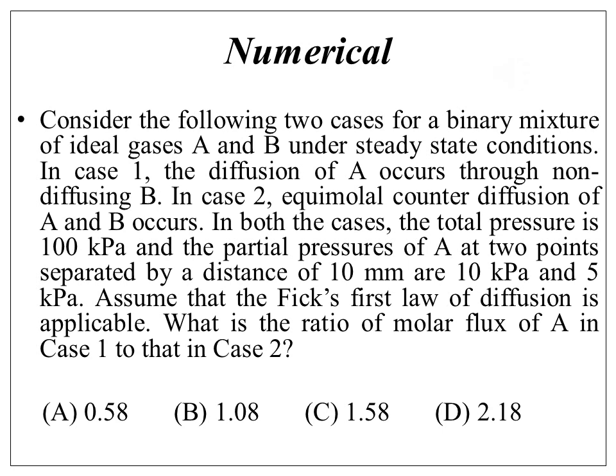In this problem, we consider two cases for a binary mixture of ideal gases A and B under steady-state conditions. In case 1, diffusion of A occurs through non-diffusing B. In case 2, equimolar counter diffusion of A and B occurs.